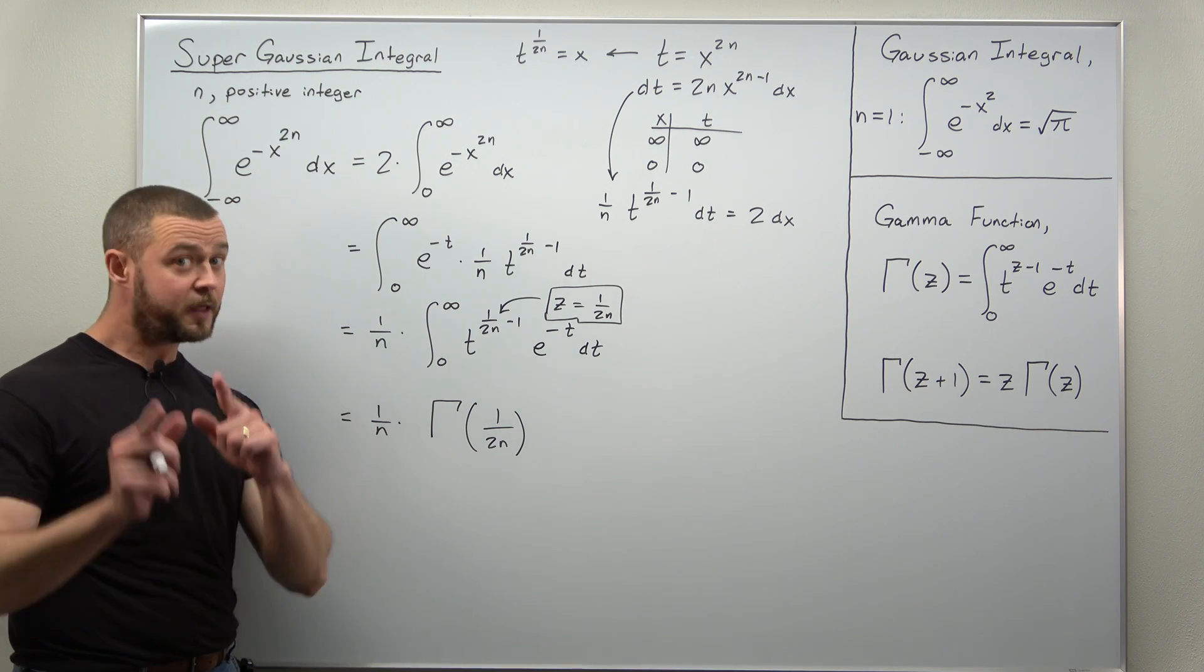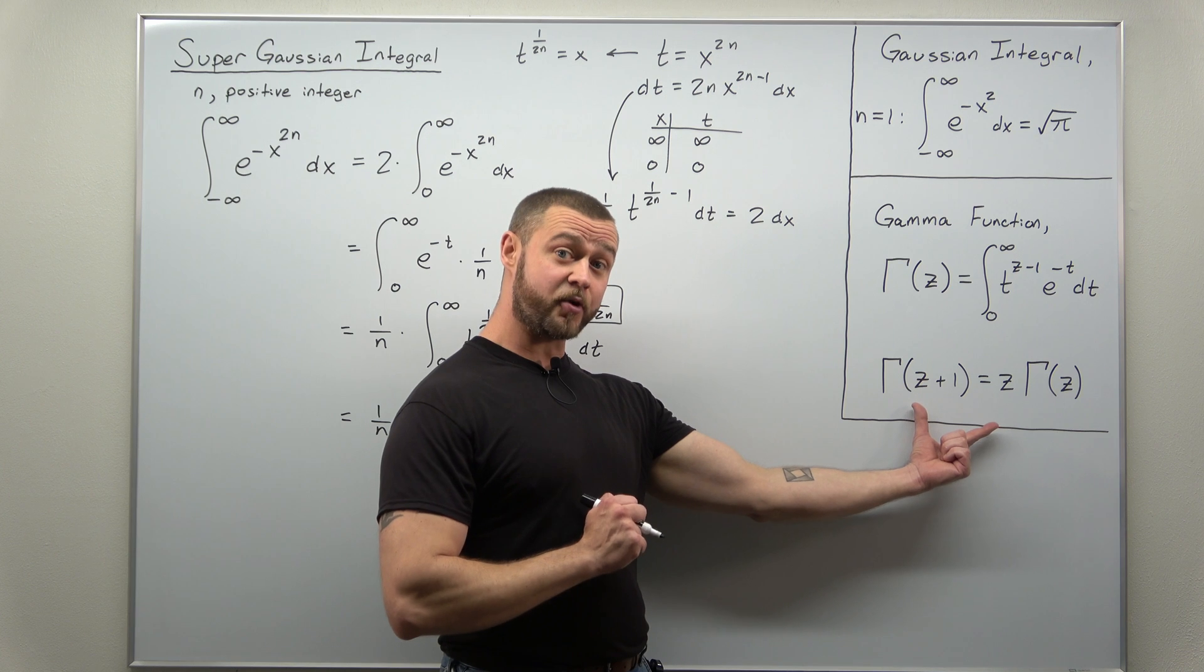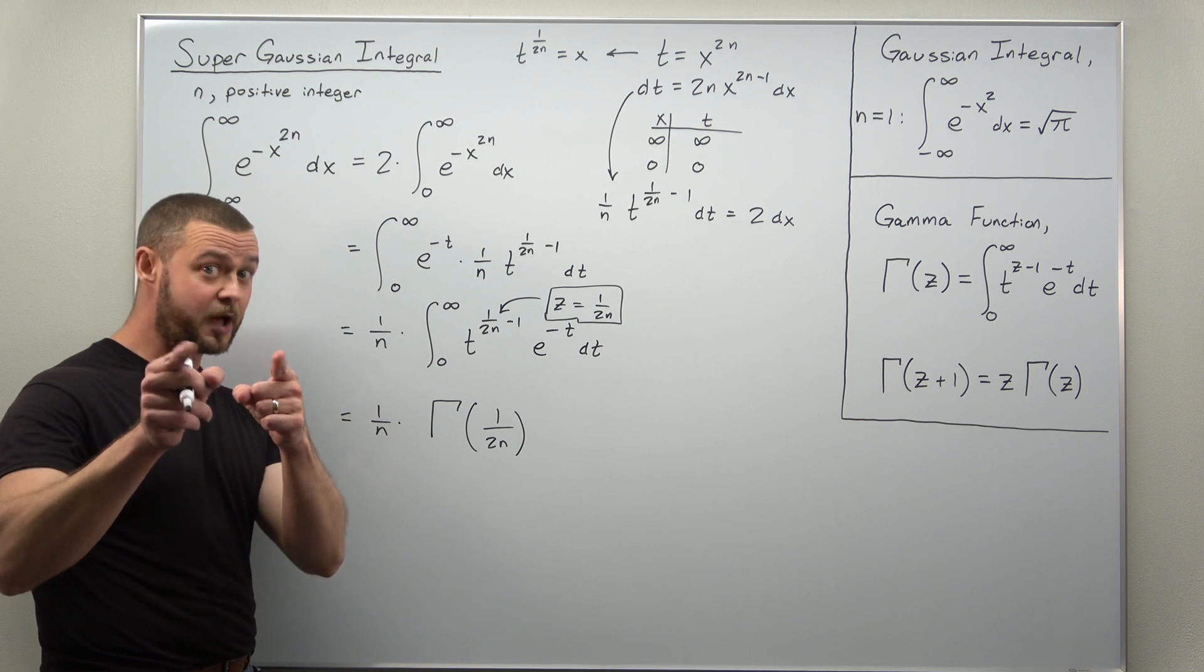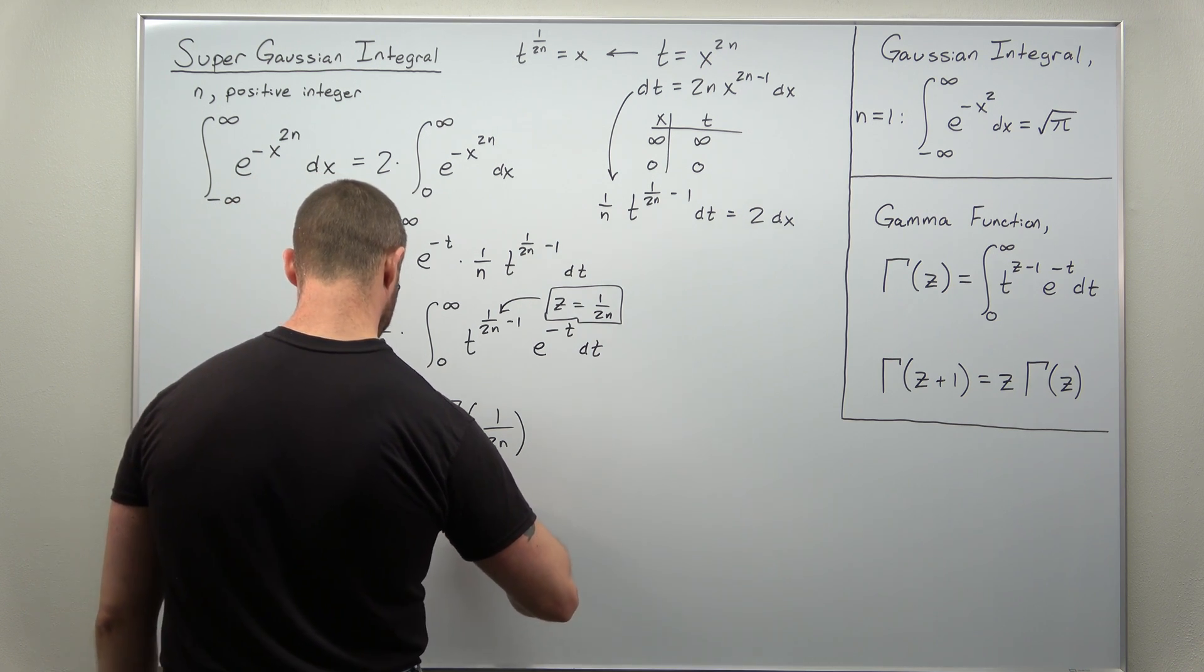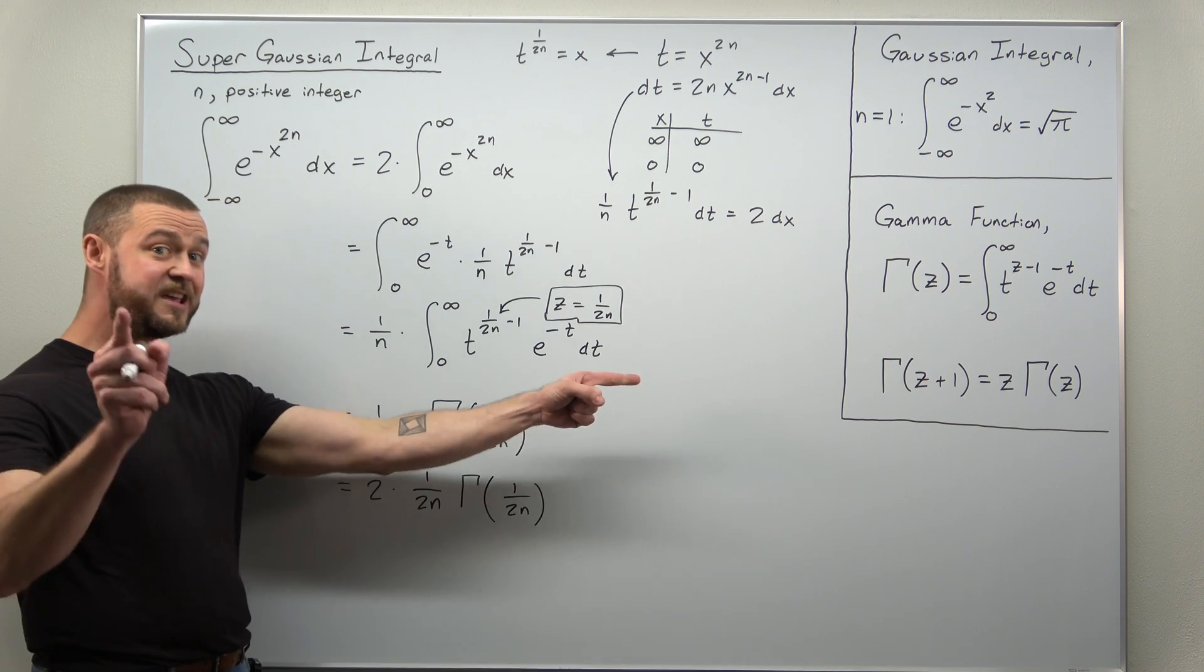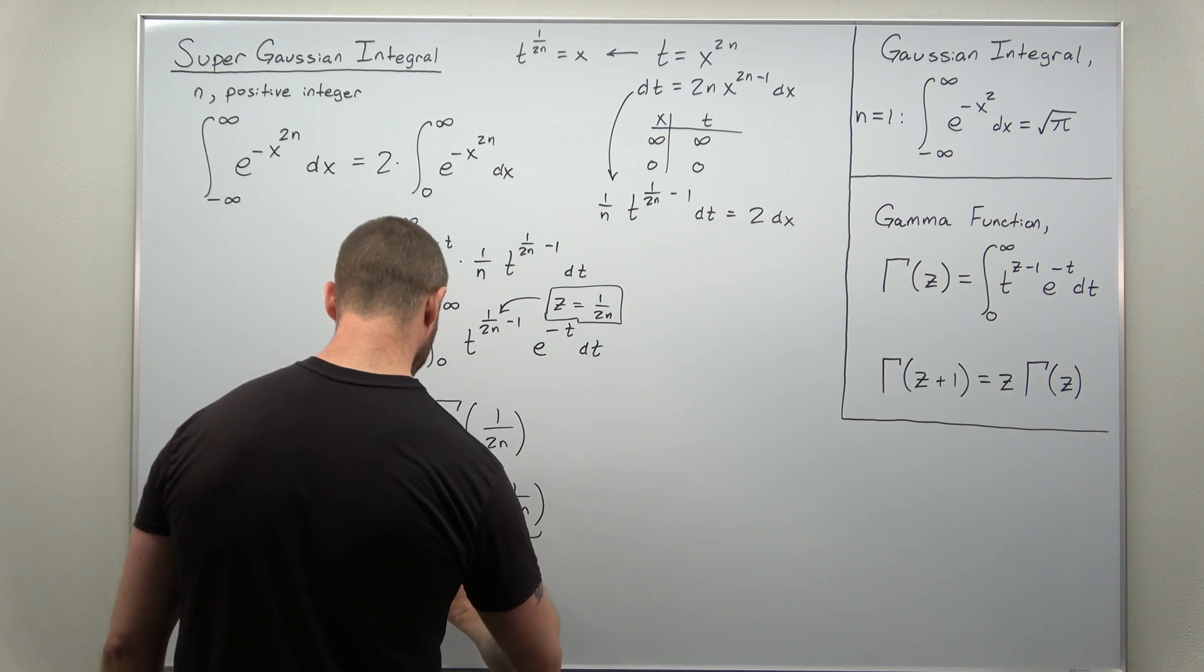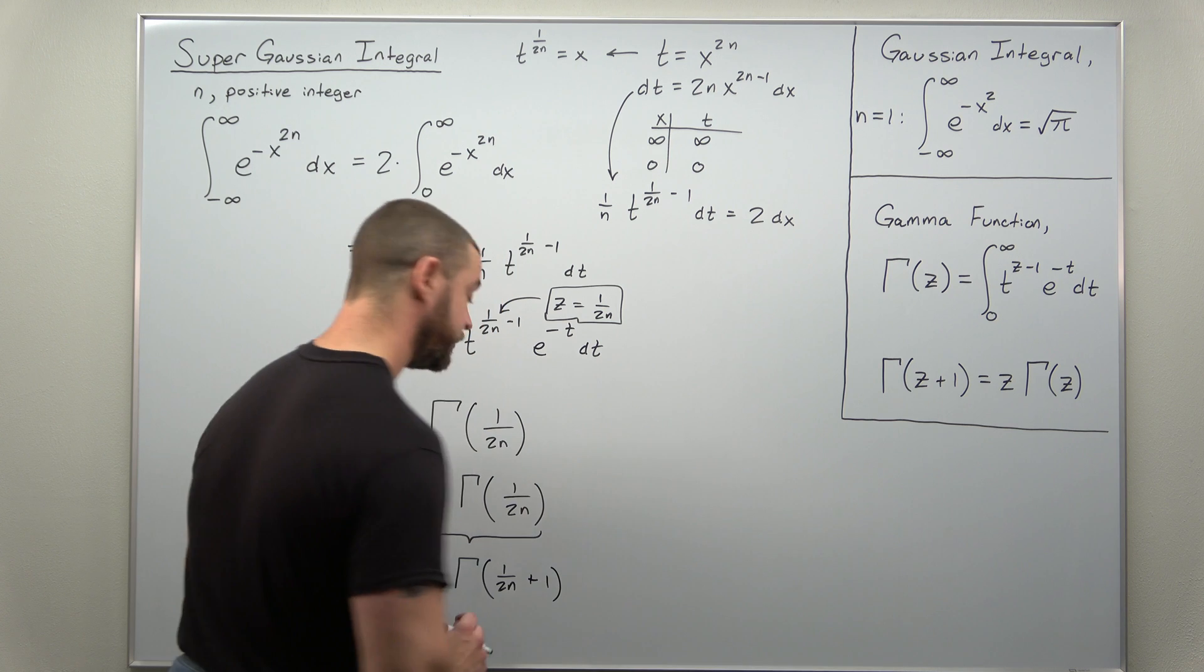Now we can actually go a little bit further and get a slightly nicer looking result by recognizing that this looks pretty close to this iterative property of the gamma function. The only thing that's missing, our input is 1 over 2n. We're missing a factor of 2 in that denominator. So let's multiply by 1, 2 divided by 2. And at this point, we can now implement that iterative property of the gamma function. And again, we're going to use z as 1 divided by 2n. So this whole term, that just comes out to equal the gamma function of 1 divided by 2n plus 1.